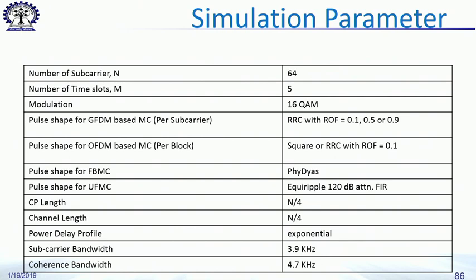To look at relative performance we take a set of simulation parameters: 64 subcarriers for simulation, which is just for primary evaluation, and the number of time slots is 5 — that is a block-based system. 16-QAM modulation is used rather than QPSK, because in QPSK detection can be done by phase differentiation alone and amplitude distortion does not affect it much, whereas in a 16-QAM system amplitude distortion influences performance significantly. We found a mid-path — going to 64-QAM is not necessary as all effects are already captured in 16-QAM.